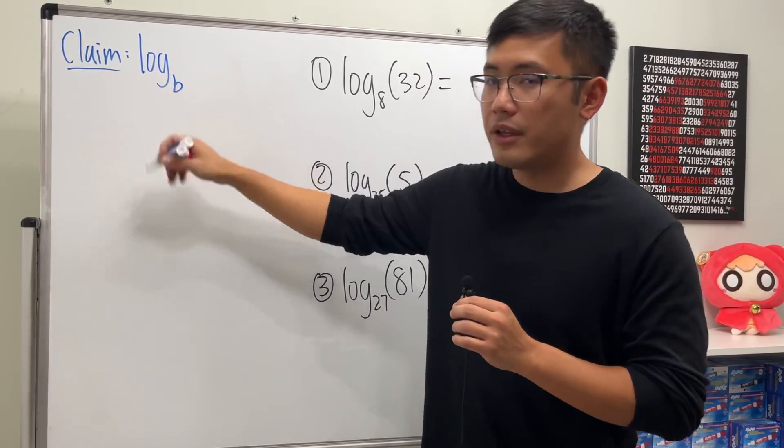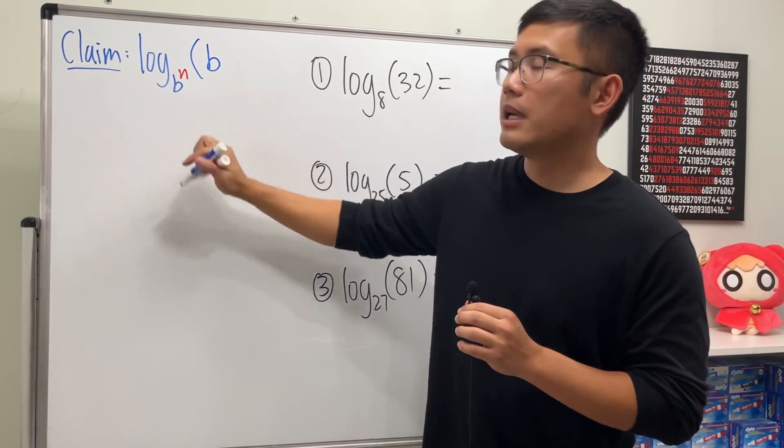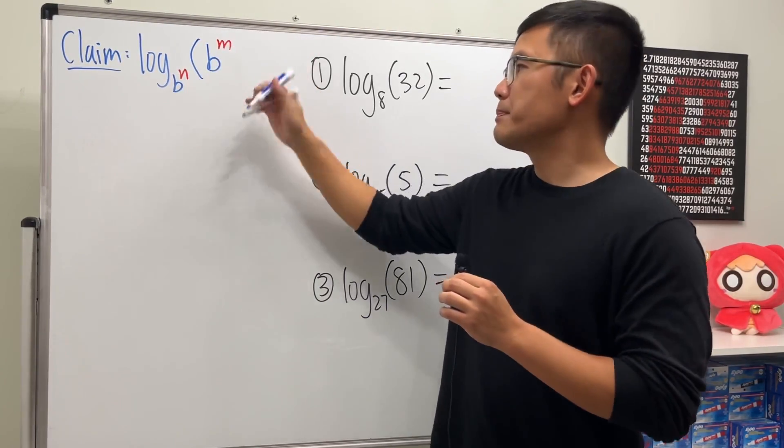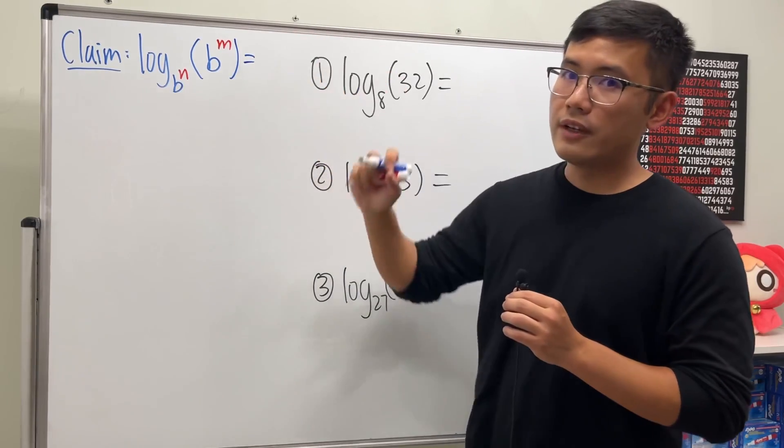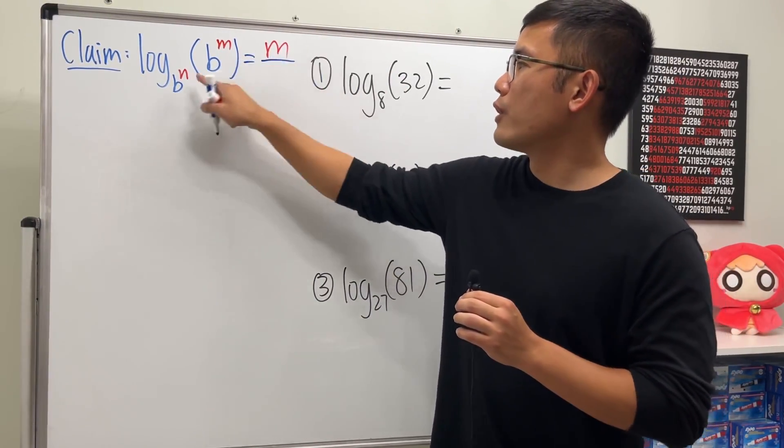...and if the input is the same b for the base but to the m's power, you will get a very nice result which is just m over n. That's it.